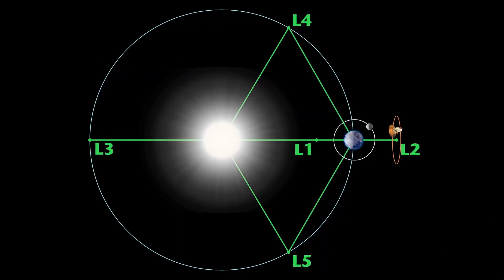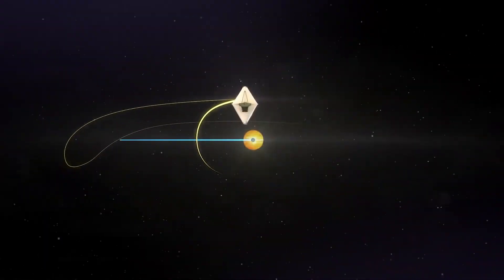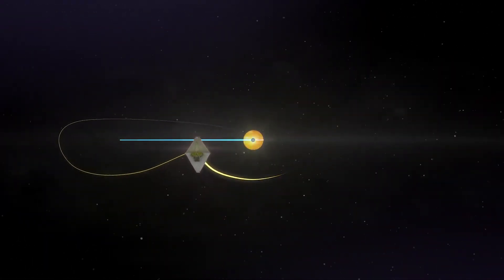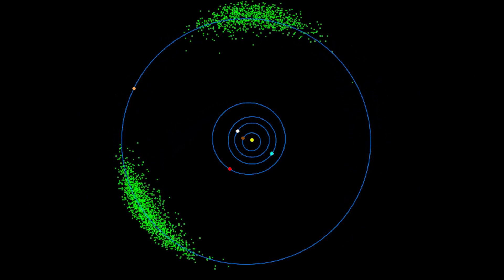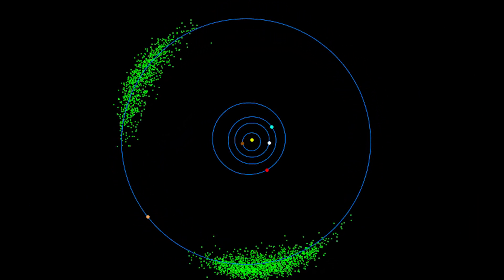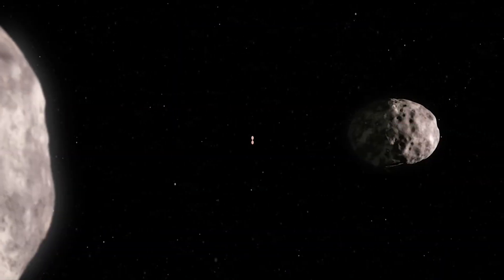So what are Lagrange points? They are places in our solar system where objects can orbit the sun at the same speed as a planet, staying in the same place relative to both of them.